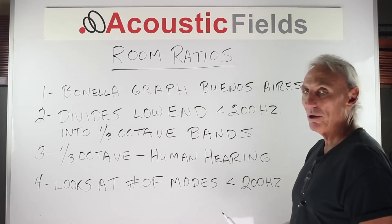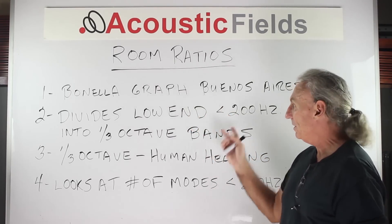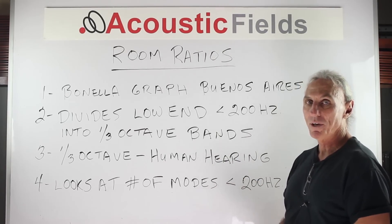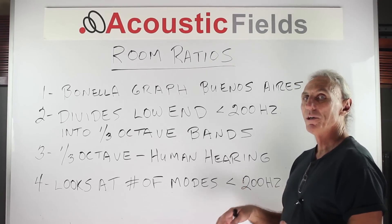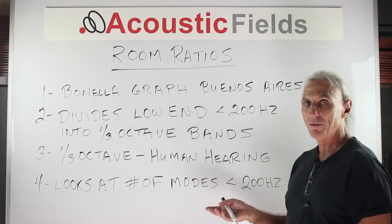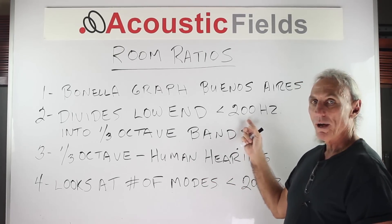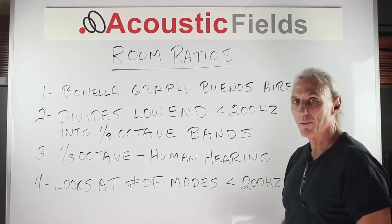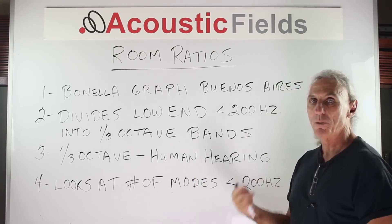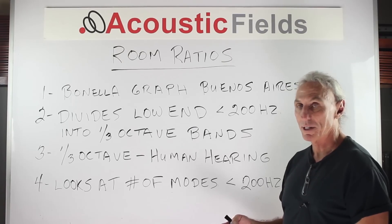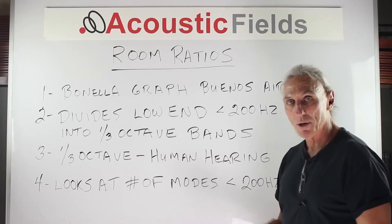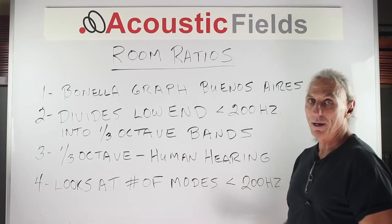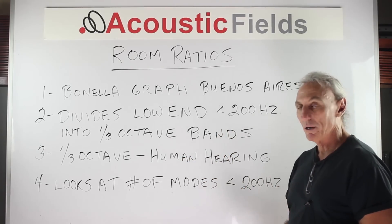The graph divides the low end of a room across different room sizes and volumes, looking at everything below 200 cycles. As I've covered in past videos, 200 Hz and below is critical because of the wavelengths involved. What Bonella did was look at the low end and divide it into one-third octave bands — and why? Because one-third octave bands is how we hear; this is human hearing processing.